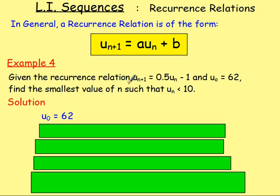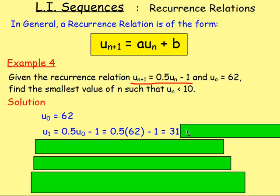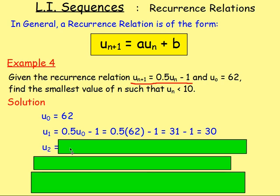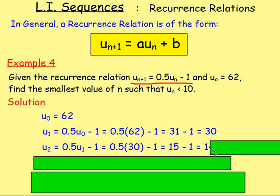So to work out the next term, use the recurrence relation. So UN plus 1, the next term, is going to be 0.5 times the previous term, take away 1. So after U0, we've got U1. So U1 would equal 0.5 times U0, take away 1, which is 0.5 times 62, take away 1, which is going to be 31 minus 1, which is 30. After that, well, 30 is not less than 10, so we need to keep on going. So after U1, we've got U2. So to work out U2, we do 0.5 times U1, take away 1. Subbing the values, so U1 is 30, so it's 0.5 times 30, take away 1, which works out to be 15 minus 1, which is 14.